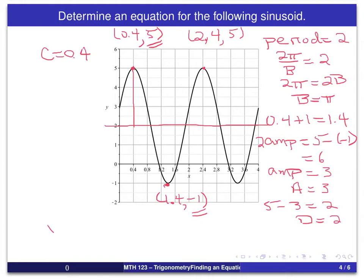So we get a value of c, 0.4. So for a cosine, we have y equals a, which is 3, cosine b, which is π, times x minus the phase shift, 0.4, plus 2.